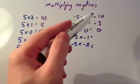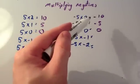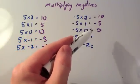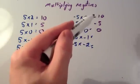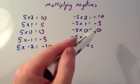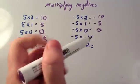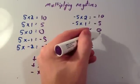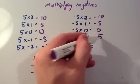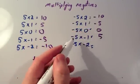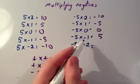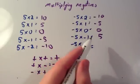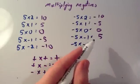Now look at what's happening to our answers: minus 10, minus 5, 0. They're getting bigger by 5 each time. So by logic, the next answer would be 5. A negative times a negative — minus 5 times minus 1 — gives you a positive answer.